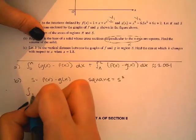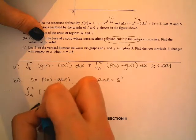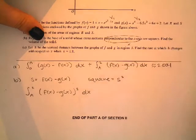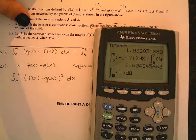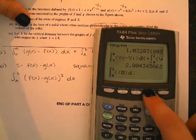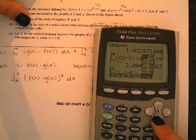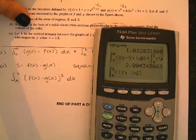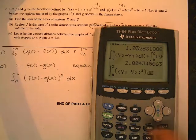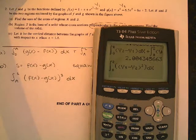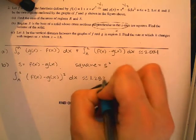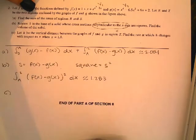And then we just have to type that in. So F of X was Y1. F of X minus G of X squared. 1.283. All right.